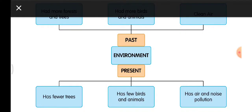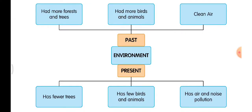Now let us draw this picture in our EVS classwork. The whole concept of the lesson lies in this picture, so draw it carefully. The sentences on the top show how the environment was in the past; the sentences at the bottom show how it is at present. In the past: more forests and trees, more birds and animals, and the air was clean. At present: fewer trees, fewer birds and animals, and there is air and noise pollution.